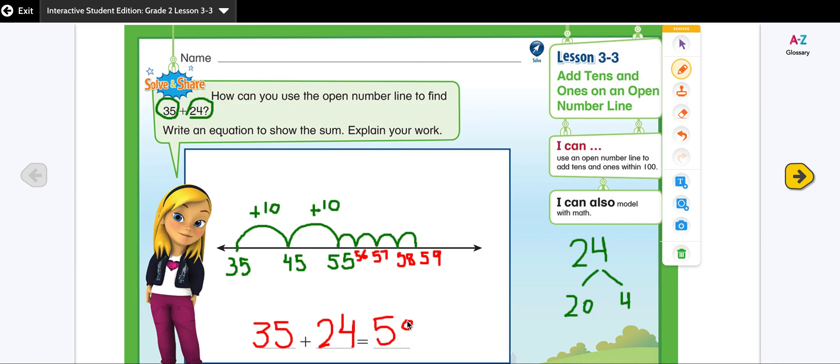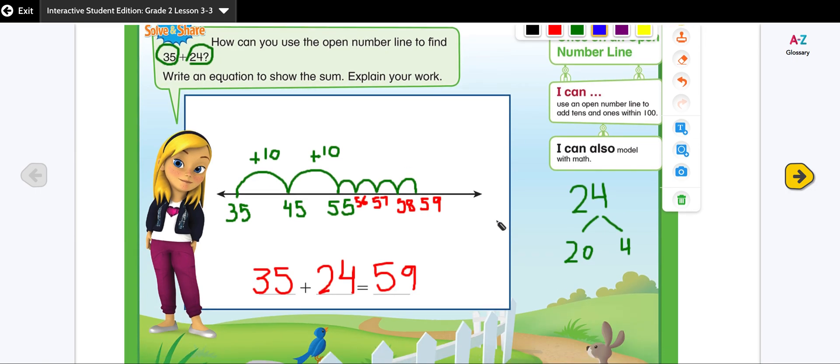Now I have to check my work, whether my work is correct. So I'm going to use another strategy, which is my standard algorithm method, just to check if I did my answer correct. Okay, so 35 and 24. And I'm going to add these numbers.